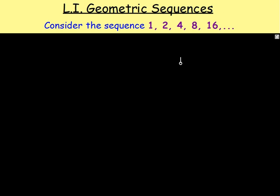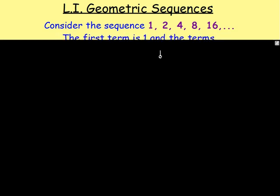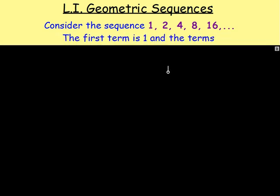Let's think back a couple of lessons to arithmetic sequences. An arithmetic sequence is when you're adding the same thing every time. Obviously, though, we are not doing that for this sequence. We are doubling the previous term in order to get the next term. So if you double one, you get two. If you double two, you get four. In other words, we're multiplying by two every time.